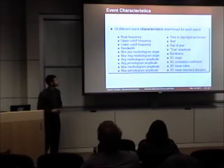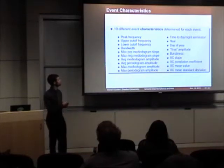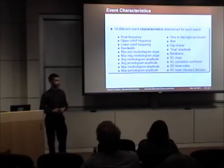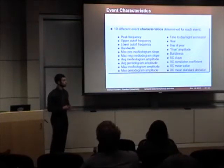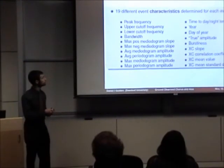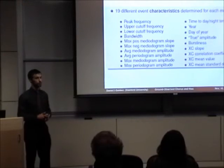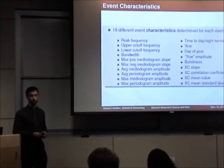After the events are detected, 19 scalar characteristics are determined for each event. These appear in several broad categories: characteristics which relate to the event frequency, those which relate to the slope and amplitude of the mediotogram and periodogram, those which relate to time, and more involved characteristics such as the true amplitude of the signal — the average over the signal's frequency of its power spectral density — a measure of the signal's burstiness, where chorus is considered bursty and hiss is not, as well as characteristics relating to cross-correlation of adjacent rows of a signal spectrogram, giving an idea of the dominant slope in frequency versus time.